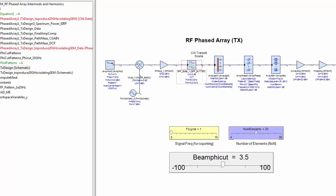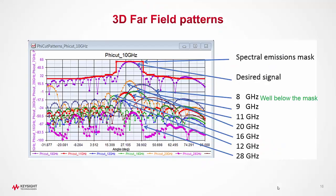Then when we simulated and plotted the spectral emission mask along with all the phi cuts of all the signal and spurious, we can easily see that most of the spurious is pushed well below the spectral emissions mask.